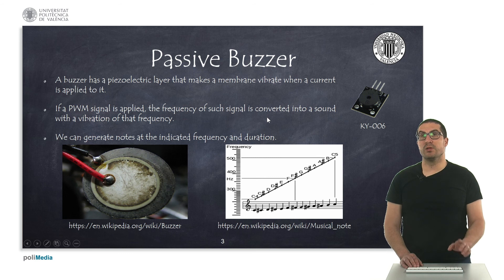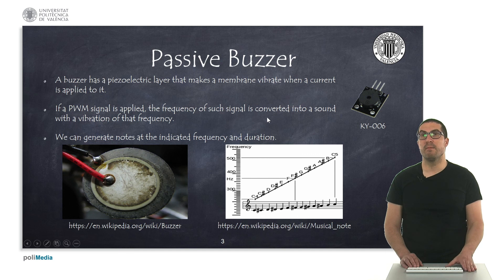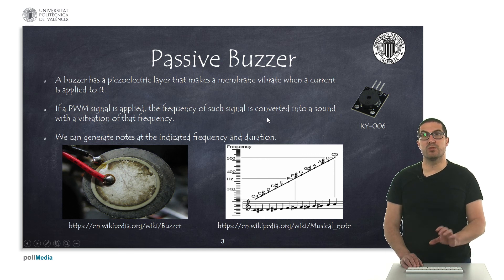Do not confuse this with an active buzzer, because with the active buzzer you cannot control the frequency. With the passive buzzer we can control the frequency by generating a PWM signal, but with the active buzzer it simply generates a beep and we cannot control the frequency of that beep.